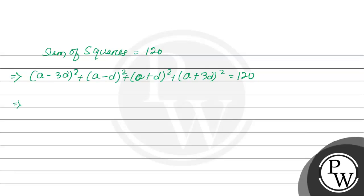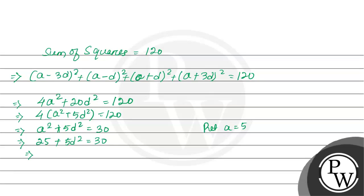By solving all these terms, we have 4a² + 20d² equals 120. Taking common 4, we get a² + 5d² equals 30. Putting the value a equals 5, we get 25 + 5d² equals 30, so 5d² equals 5, which means d² equals 1. Therefore d equals plus or minus 1.